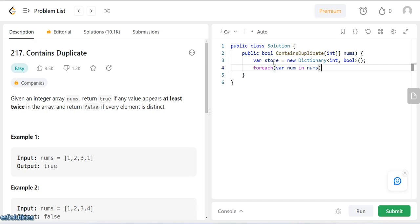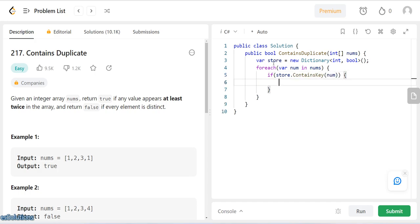So I'll just iterate through every num in my nums. And basically the same question I'm asking is, does our store contain that number. So if it contains it, it means we found a duplicate so we can just return true. But if it does not contain it, it means it doesn't have it so we want to add it to our store.